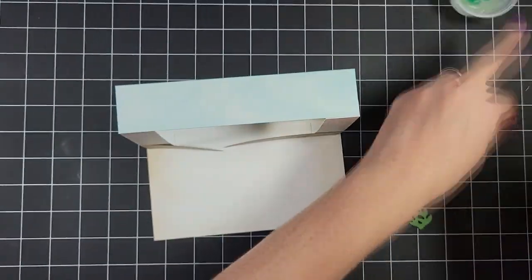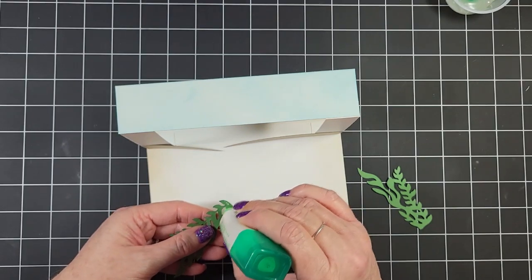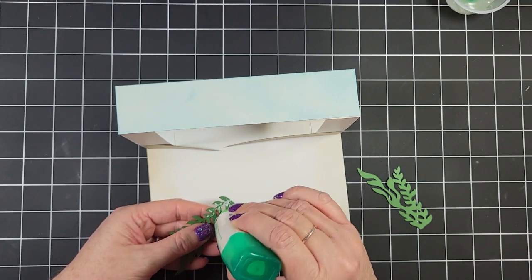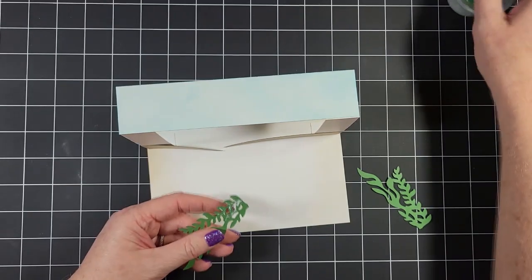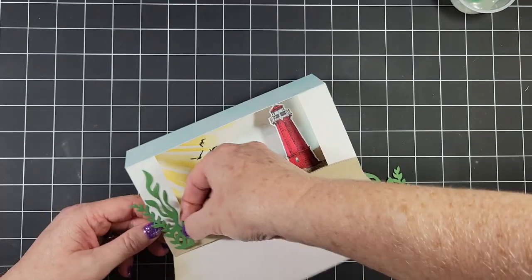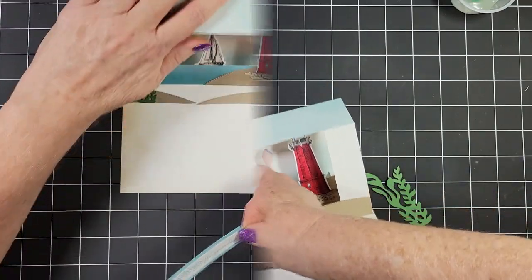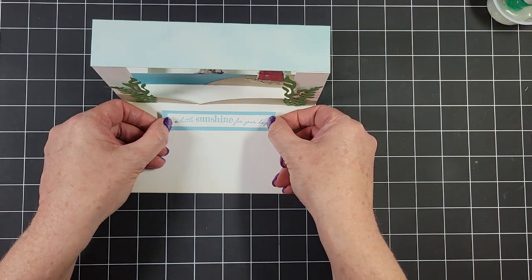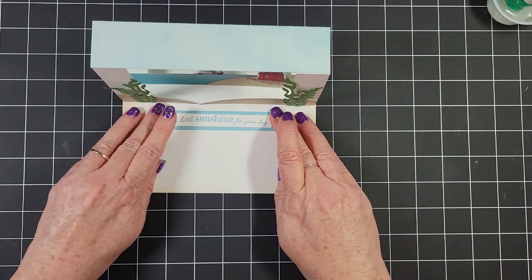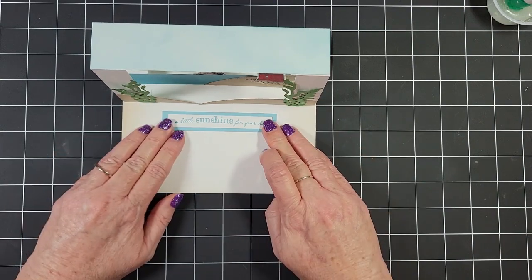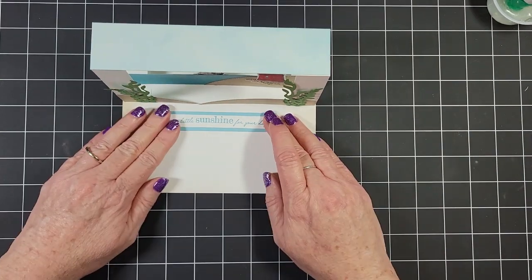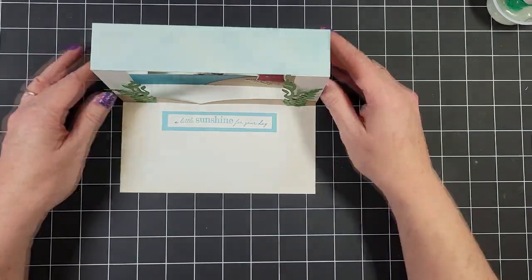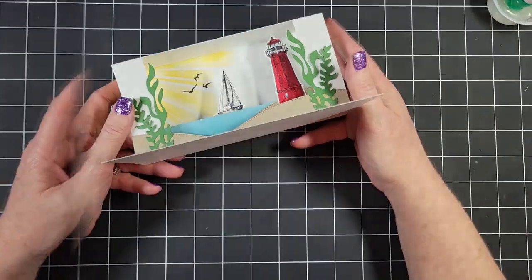Okay. So I also die cut these plants from garden green, and I'm just going to adhere those on top of the little sand hills that we just created. And there we have that. And now I'm coming in with a sentiment. I stamped, again, don't worry. The measurements will all be on my blog. So head over there for all the information.